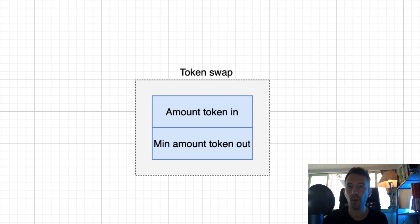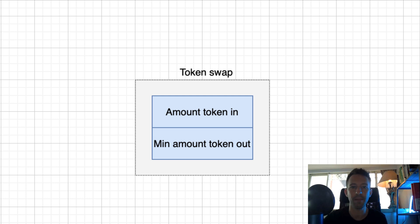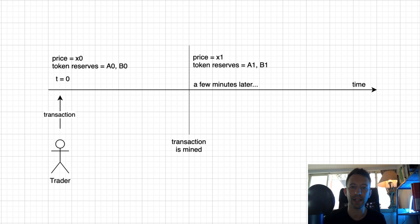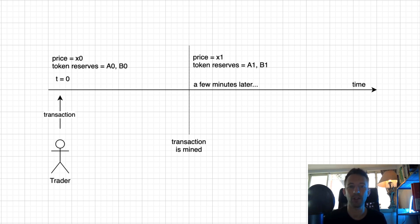When a trader specifies a token swap, they must specify the minimum amount of output tokens — but why? Before trading you could use the constant product formula to estimate your slippage and expected output, but you cannot know exactly in advance because you don't know exactly when your transaction will be mined. By the time it is mined, the market may have moved, changing both the initial price and the slippage, meaning you will get a different amount of tokens as output. So you need to specify your tolerance compared to the current market situation.